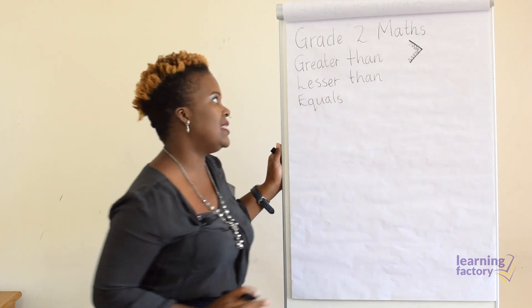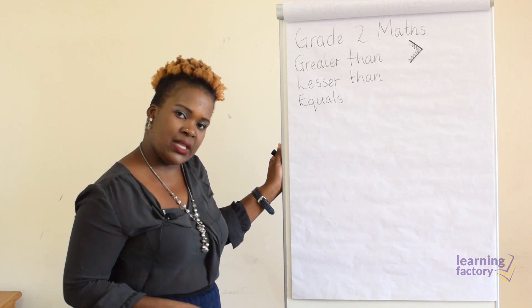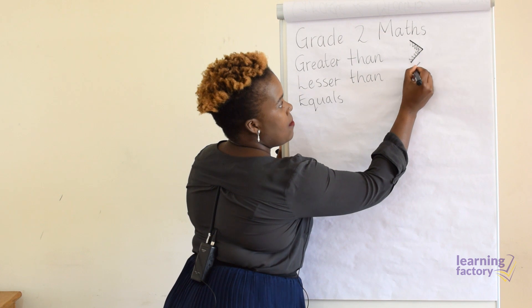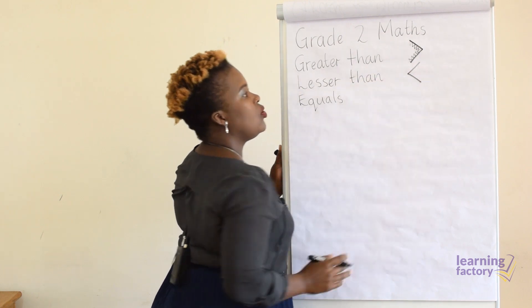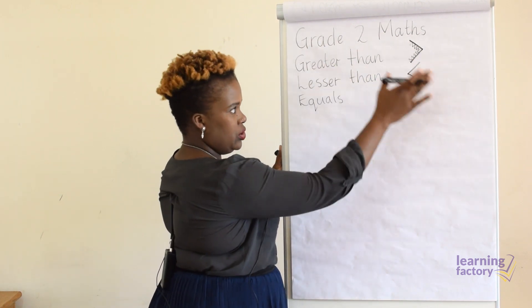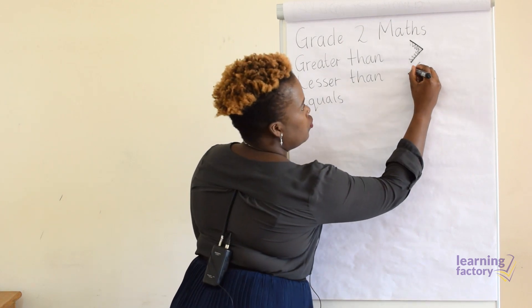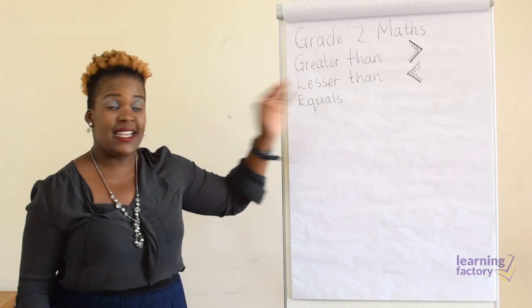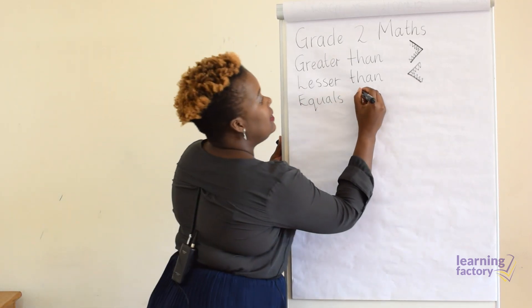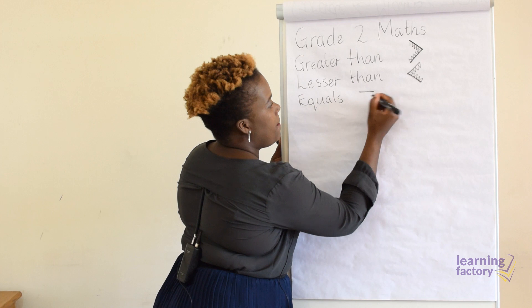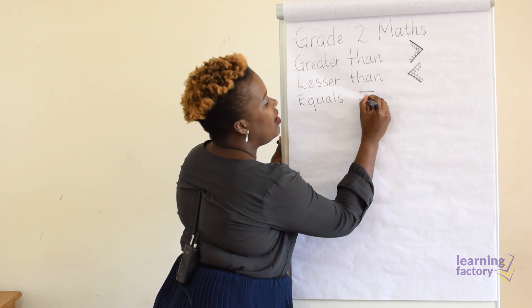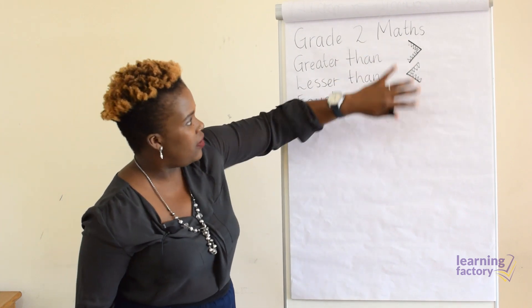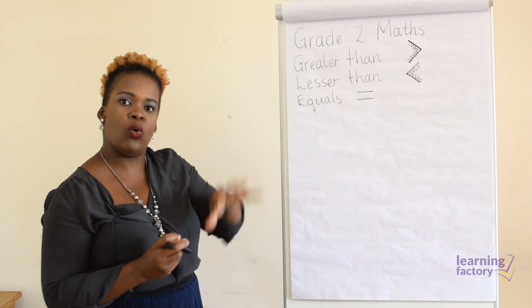Now I'm going to draw the lesser than sign — it looks like this and it's always facing to the right. I'll draw my crocodile teeth on it. Next is the equal sign — it looks like our ordinary equal sign when we're doing sums. I always like to think of our signs as crocodiles because they're always eating something, and most times the sign is always eating the bigger number or the bigger object.